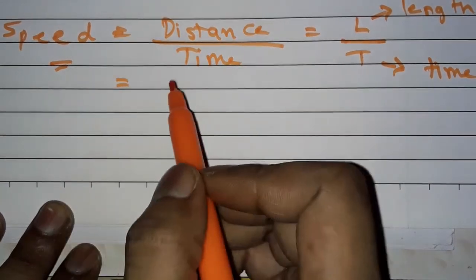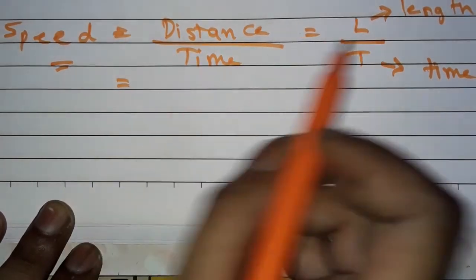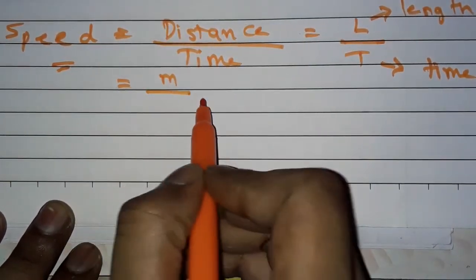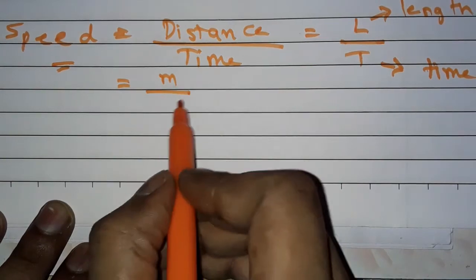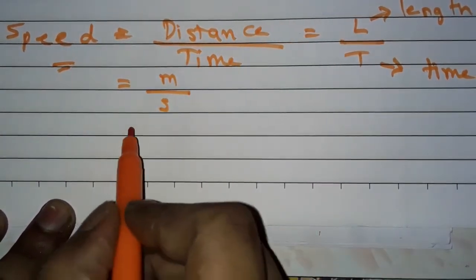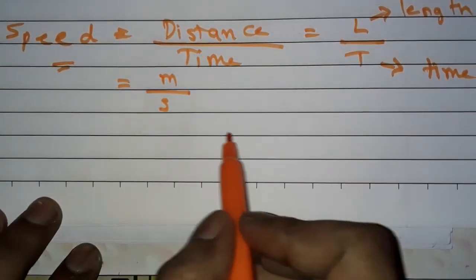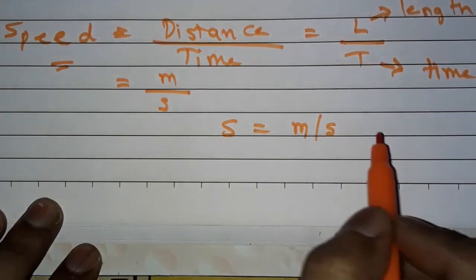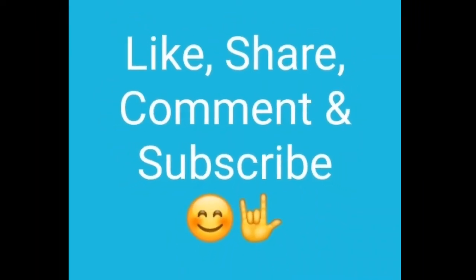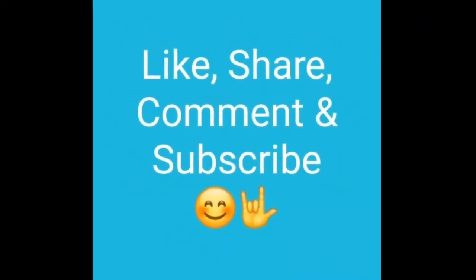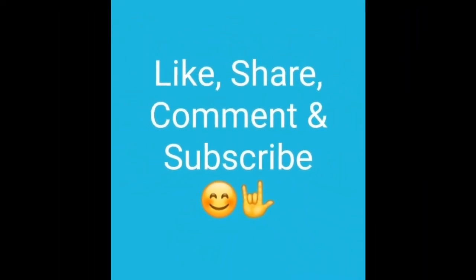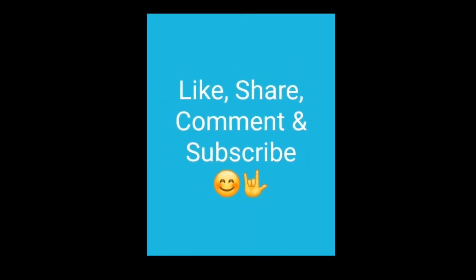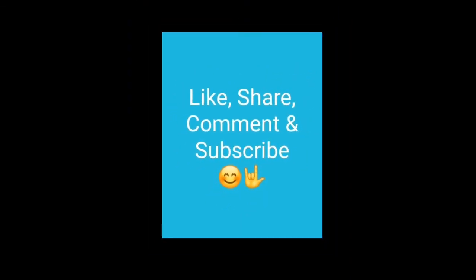For the unit of speed, if the unit of length is meter and time is second, then the unit of speed is equal to meter per second. Thank you friends for watching this video — like, share, and comment, and subscribe to my channel. Thank you.